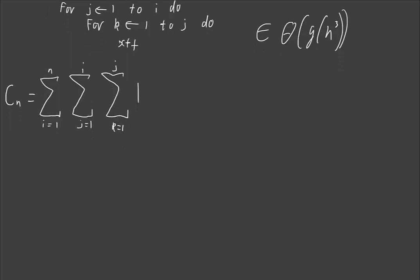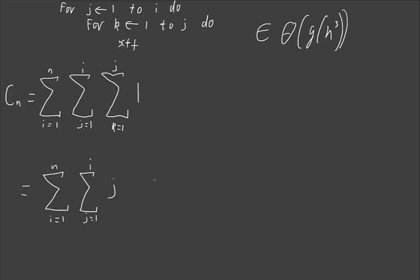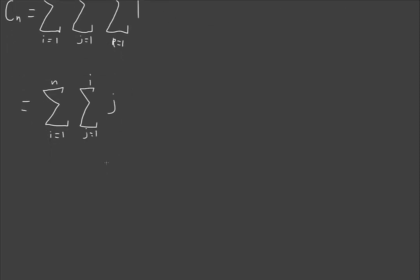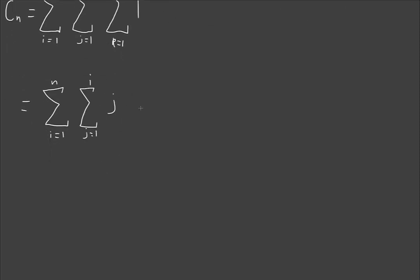Next up, we're going to simplify this out as we always do. So c of n equals sum i equals 1 to n, sum j equals 1 to i of, and this is our famous j minus 1 plus 1 is j. Nothing of any kind of great surprise there. And then we see that this is in that same form we're used to seeing, where you're just summing the iterator all the way up to that.